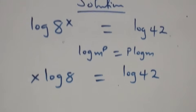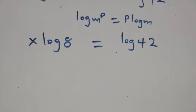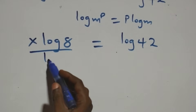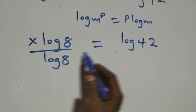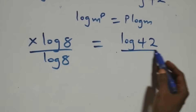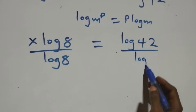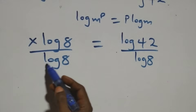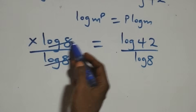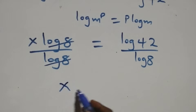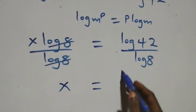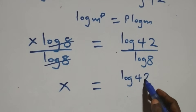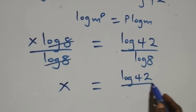The next step: divide both sides by log 8. The log 8 terms cancel each other and we are left with x, which equals log 42 over log 8.